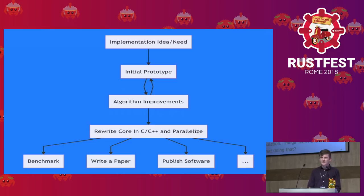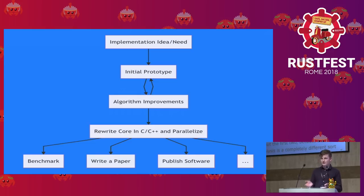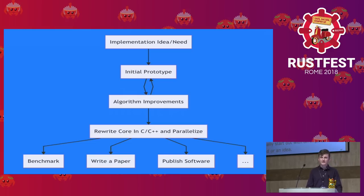Most people doing this sort of programming aren't computer scientists — they're physics students, math students, people who are just interested. They probably don't have much of a programming background, and higher-level languages make it quite easy to get started. So you write your prototype, you improve your algorithm a little, and then you might realize there's a big bottleneck and you need to rewrite that part in a lower-level language — usually C or C++.